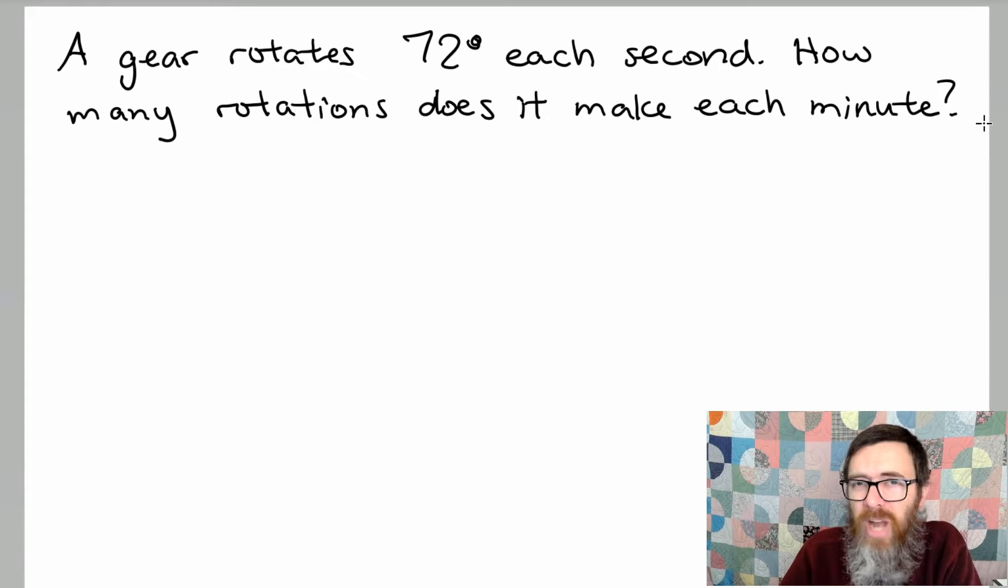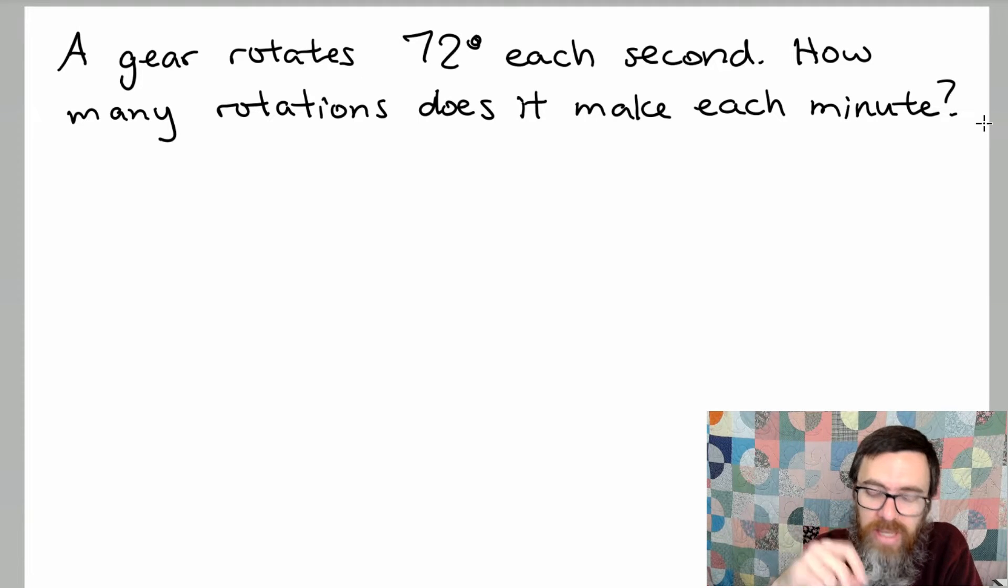In this video we will look at doing some more application problems with angle measures and especially rotations. Let's look at this first example. A gear rotates 72 degrees each second. So how many rotations will it make each minute?